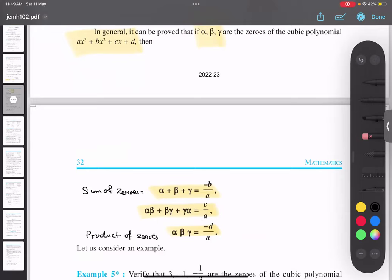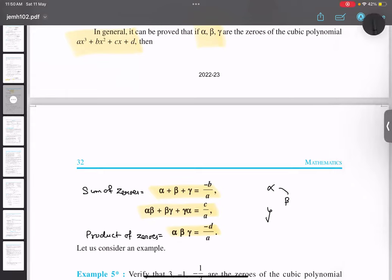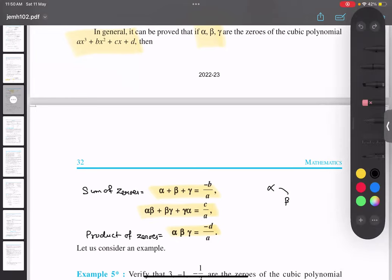Alpha into beta into gamma. This is sum at the same time product of two consecutive zeros, so alpha getting multiplied by beta, beta getting multiplied by gamma, and gamma getting multiplied by alpha. That's all.